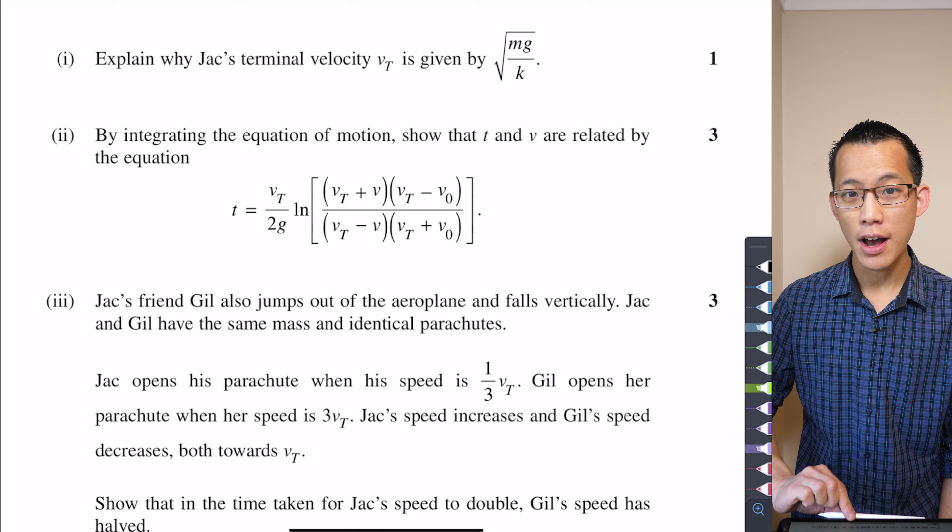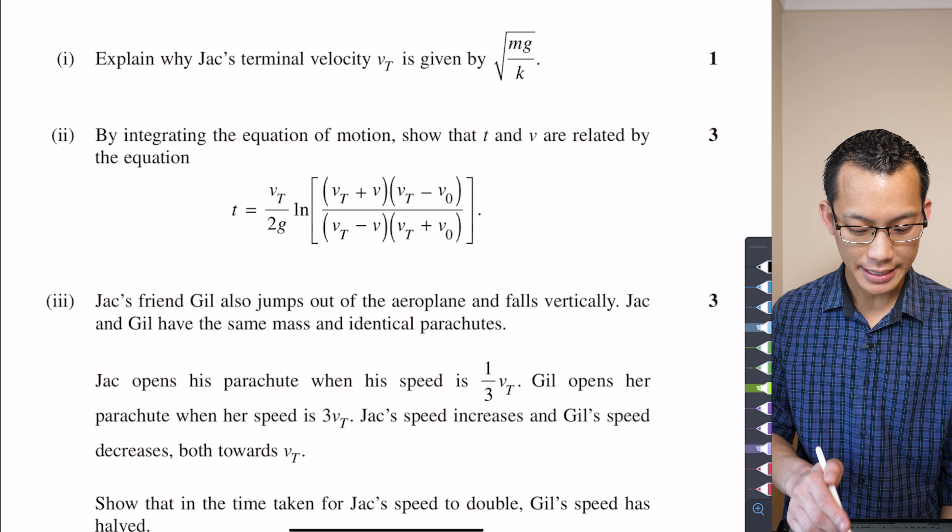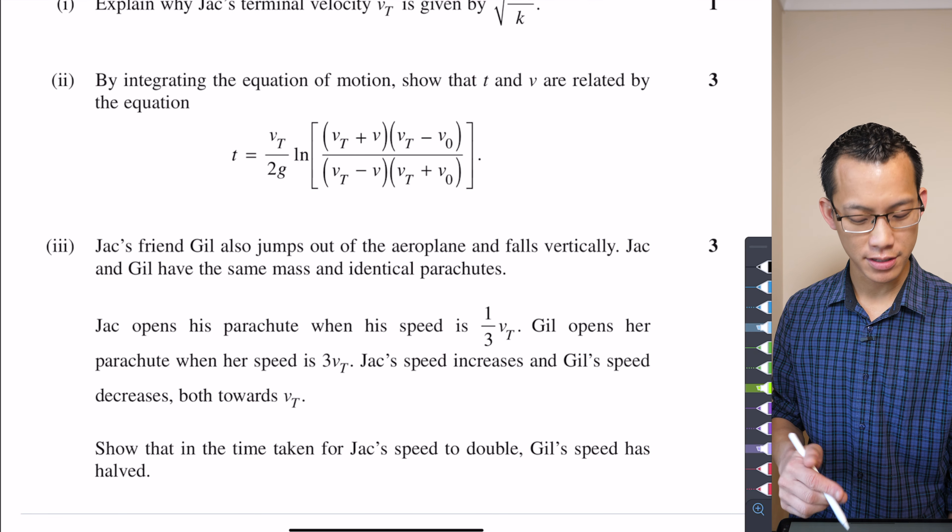But if you have even just a cursory look at parts two and three, they show you that part one working out terminal velocity is not a coincidence. They want you to use, look at how many times VT, which is their designation for the terminal velocity.